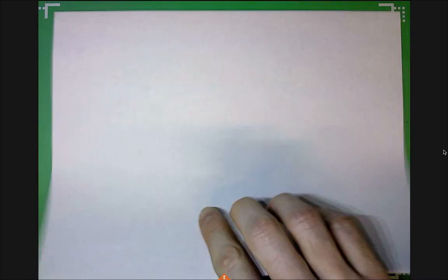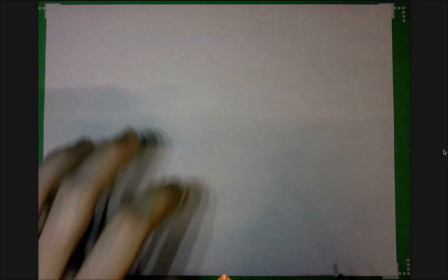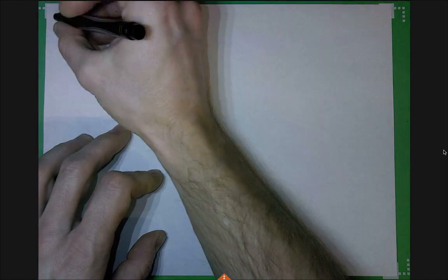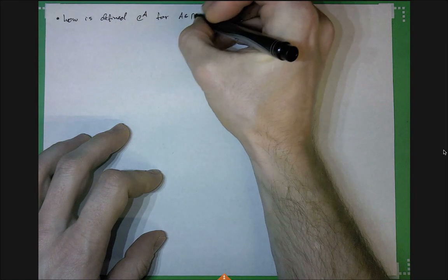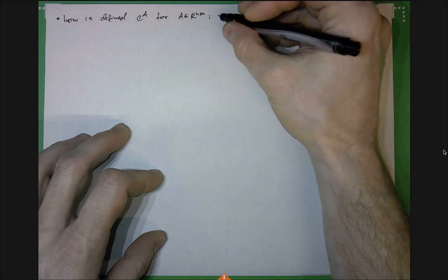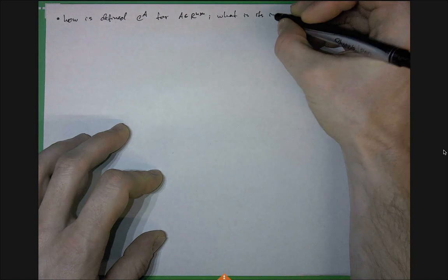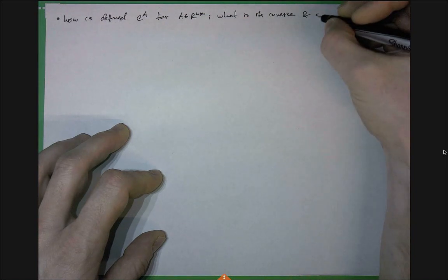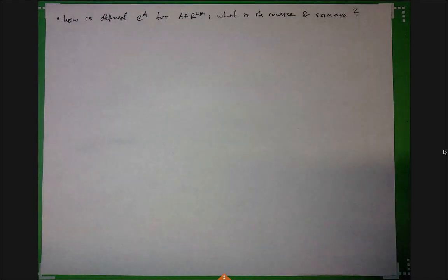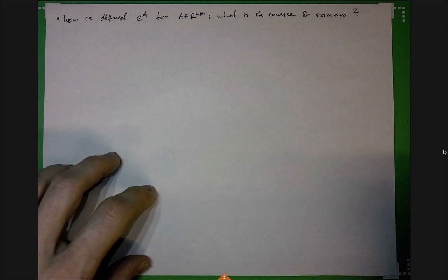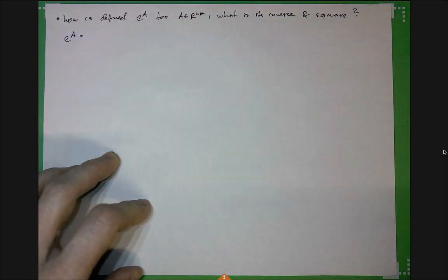Let me do one more practice problem to clarify something about the matrix exponential. Practice problem: how is the matrix exponential defined for an n-by-n matrix, and what is its inverse? I think I forgot to mention one important property that might be useful in the final.